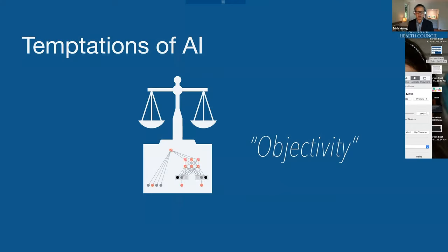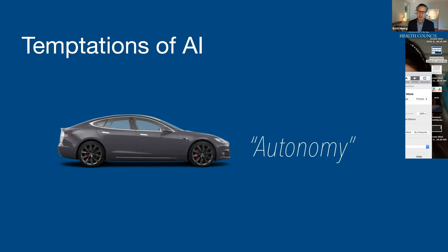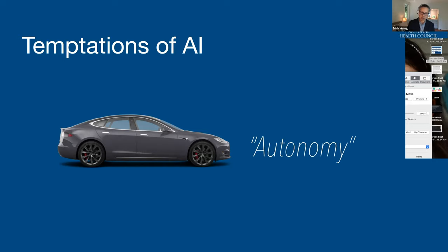I want to divert into some of the temptations we have with artificial intelligence. One is most people think, well, it's a computer doing it, so this must have some objectivity to it — the computer doesn't have any biases of its own, it should be objective. The other temptation is this sense of autonomy. You feed a little bit of trigger text into this transformer and it generates a whole paragraph of very fluent-sounding text. And certainly for those of you who drive a Tesla, there's this autopilot feature and a temptation to take your hands off the wheel and let it drive. It's sort of freaky and magical. We know that there have been some bad outcomes because of that.